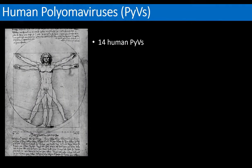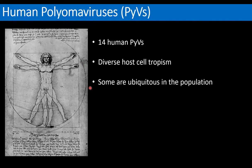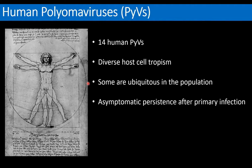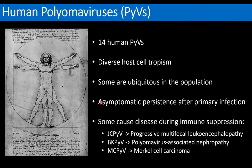There are 14 known human polyomaviruses that infect a diverse range of cell types in the human body. Some are ubiquitous in the population — the chances are good that everyone listening has at least one polyomavirus in their system right now. We are likely exposed during childhood, after which they cause asymptomatic persistent infections. Our immune systems work hard to keep these infections in check, but when the immune system is compromised, these common human viruses can reactivate and cause very serious diseases.